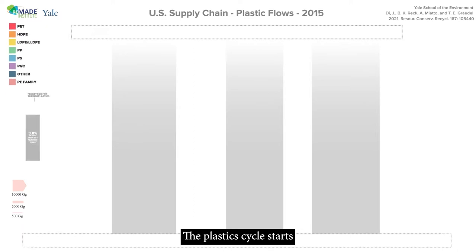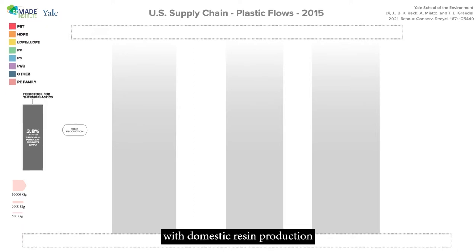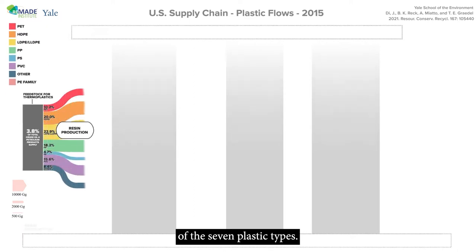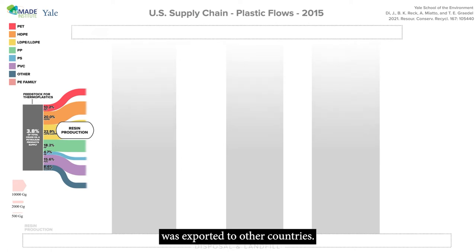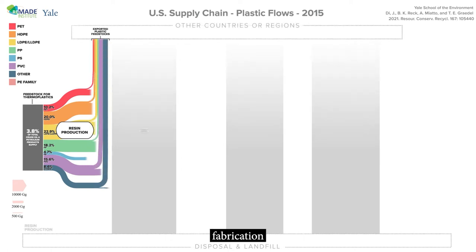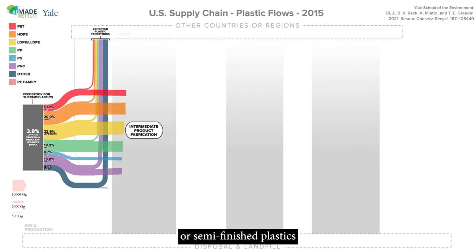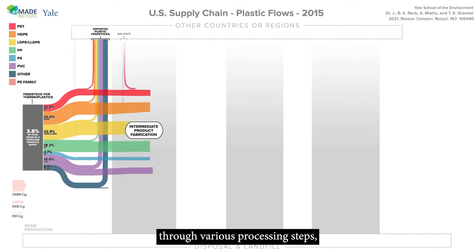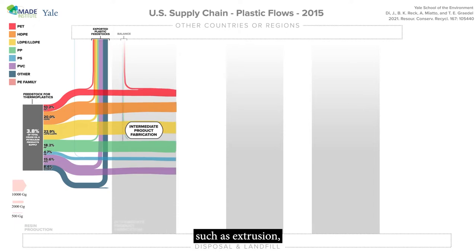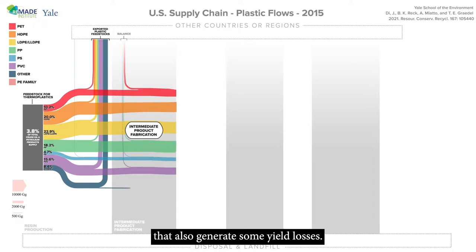The plastic cycle starts with domestic resin production of the seven plastic types. A substantial amount of resins was exported to other countries. In intermediate product fabrication, resins are converted into intermediate or semi-finished plastics through various processing steps, such as extrusion, injection molding, or blow molding — processes that also generate some yield losses.